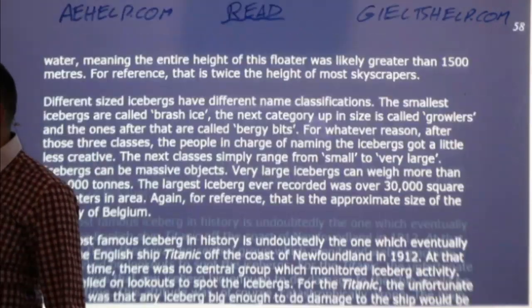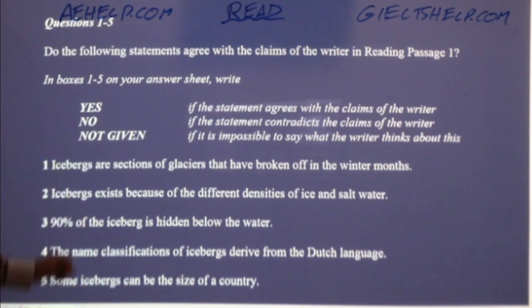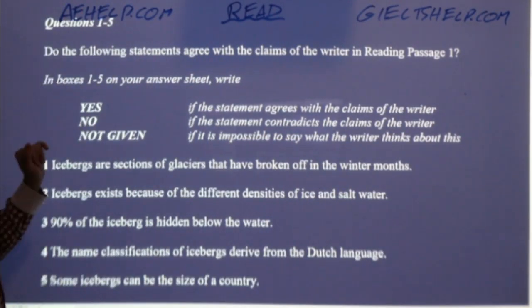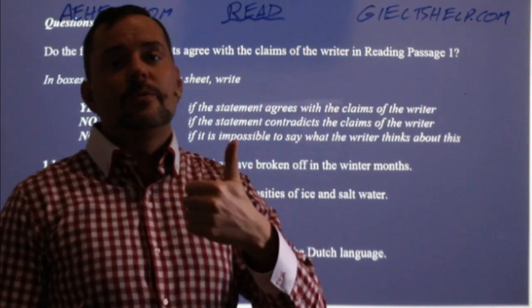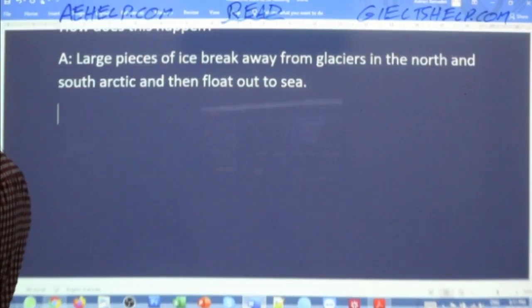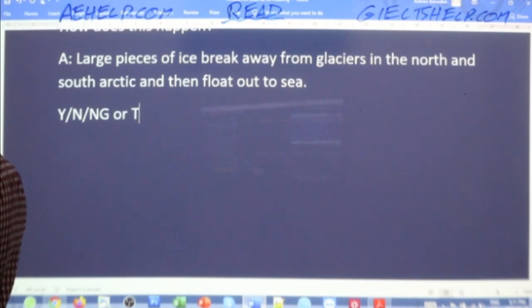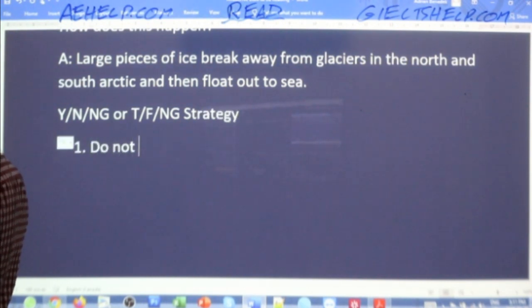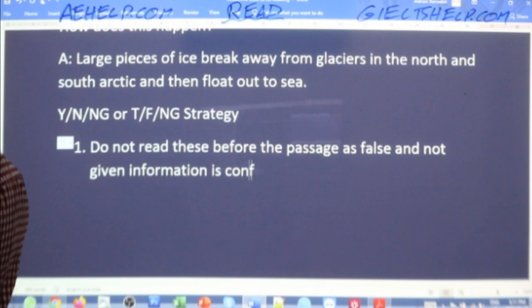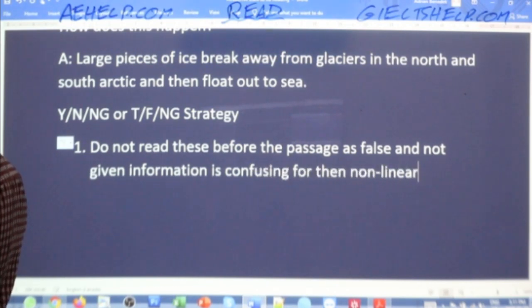Now we look at the questions. Questions one to five: do the following statements agree with the claims of the writer in reading passage one — yes, no, not given. You should not read these before the passage, and you should not skim-read for these. False and not given information is confusing for the non-linear human mind.